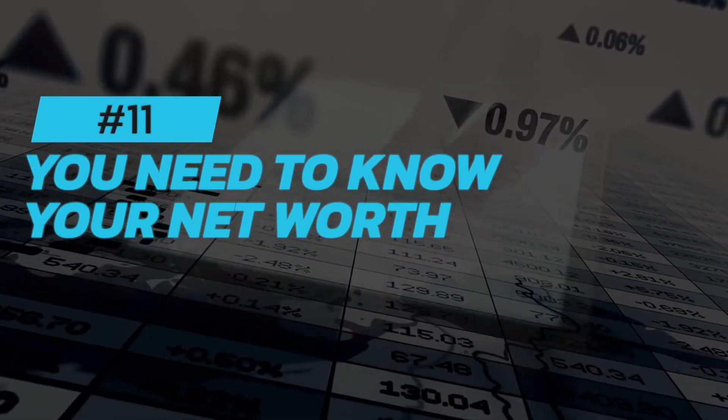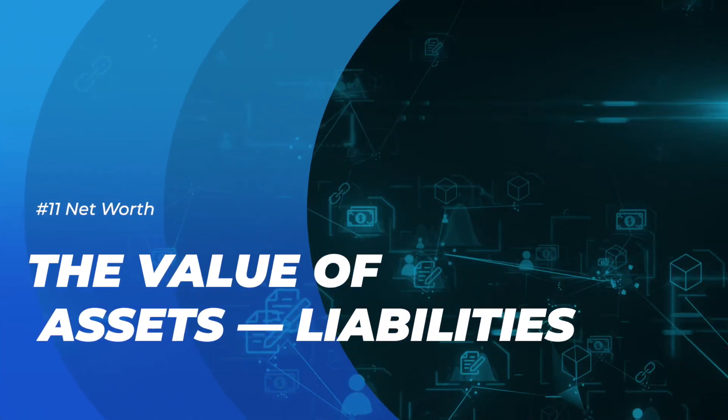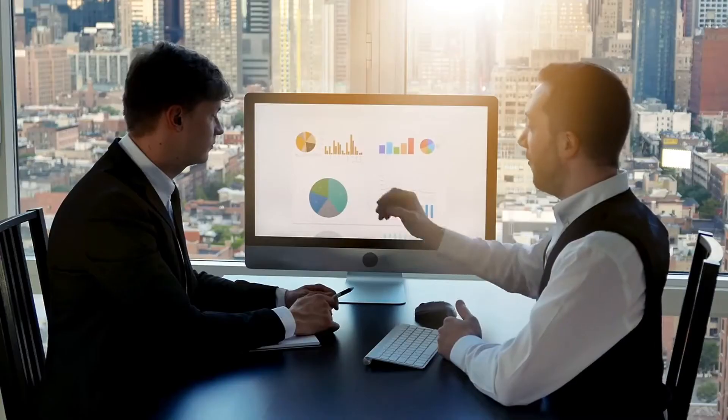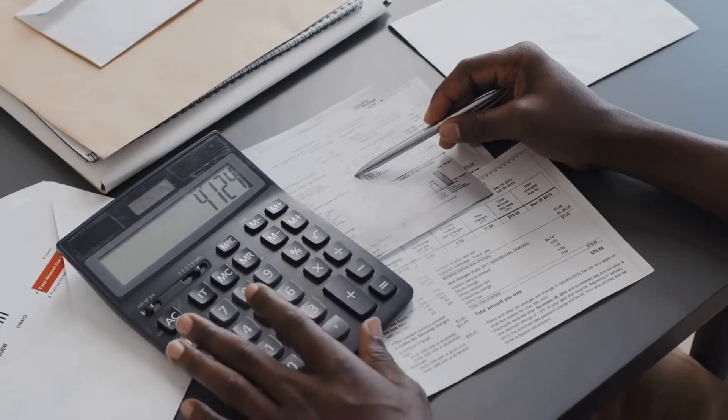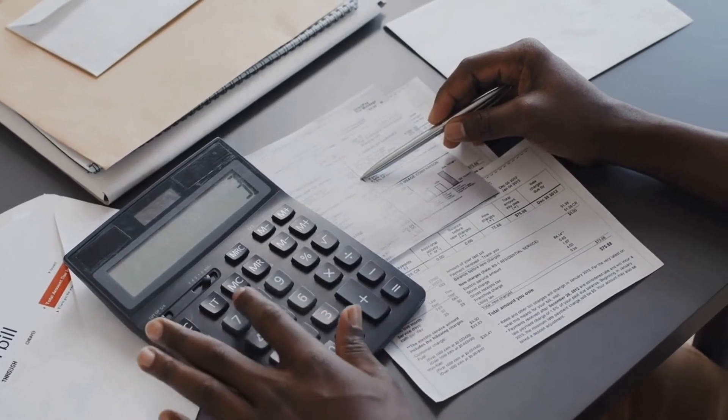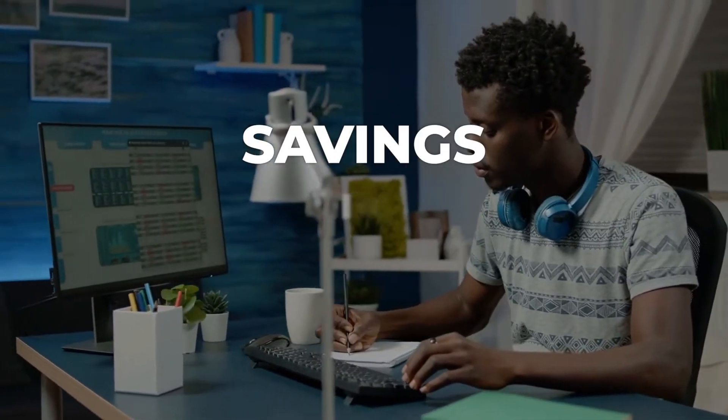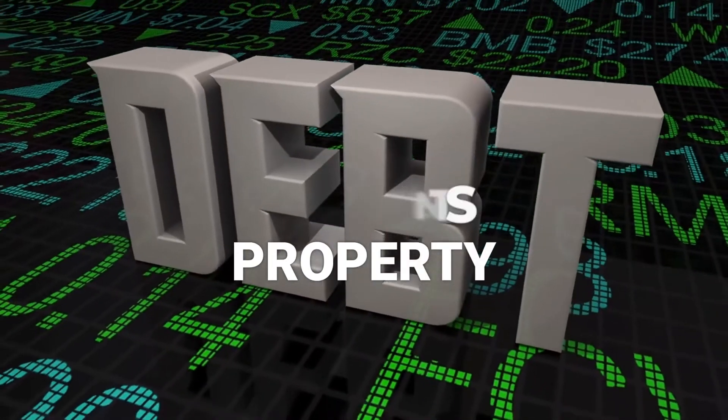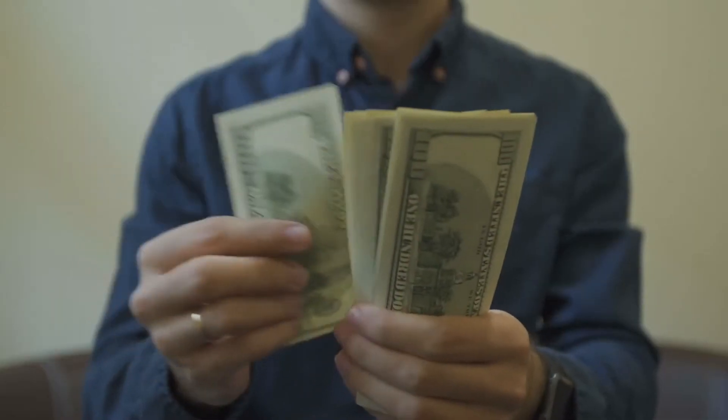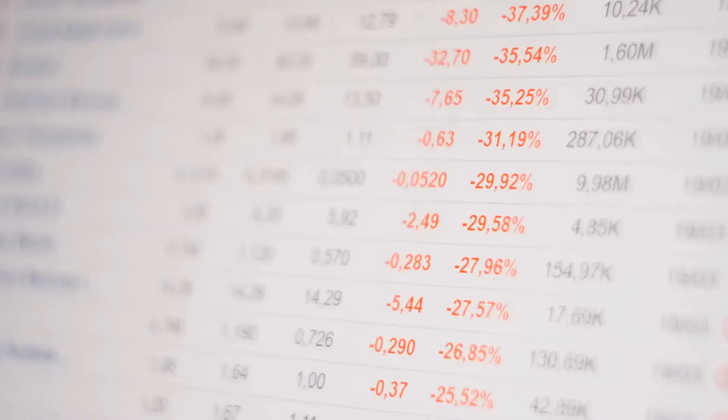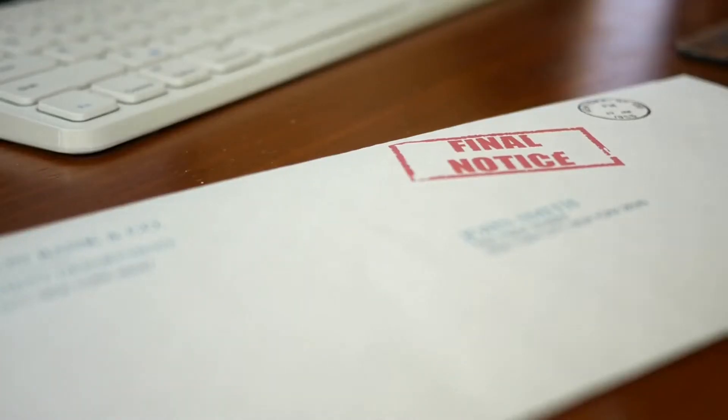Number eleven: You need to know your net worth. Your net worth is the value of your assets minus your liabilities. It's a good way to measure your financial health. To calculate your net worth, add up the value of your assets and subtract your liabilities. Your assets include your savings, investments, and property. Your liabilities include your debt. If your assets are worth more than your liabilities, you have a positive net worth. If your liabilities are worth more than your assets, you have a negative net worth. This means you owe more money than you have.